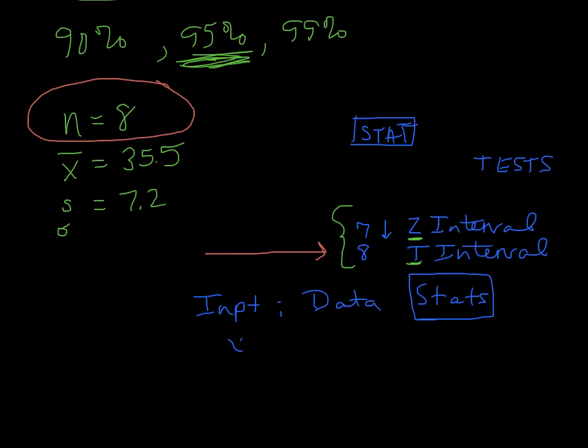Underneath it, it wants to know what's the sample mean. And so in this case, you would type in 35.5 for X bar.